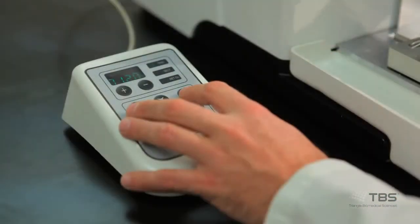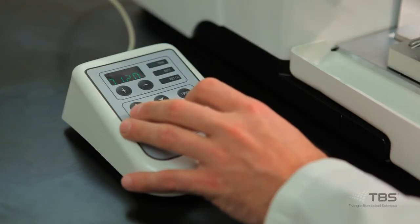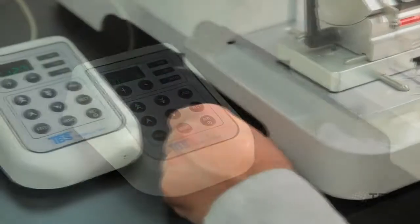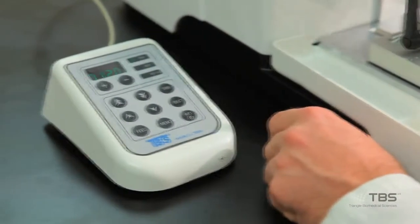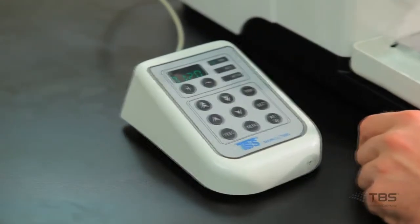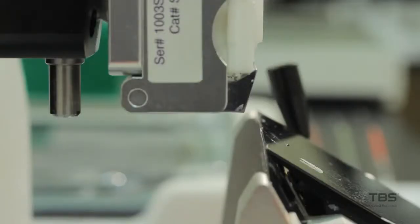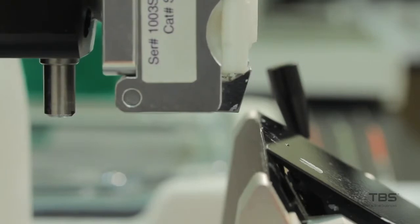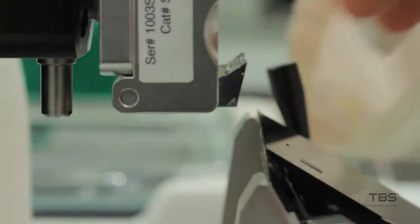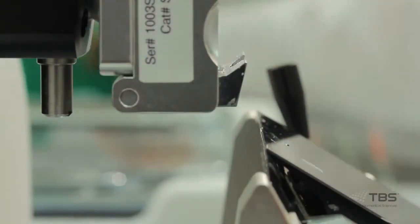The SC2500 model includes a user-friendly handpad controller that allows the operator to store separate trimming and sectioning thicknesses. An automatic specimen positioning memory function allows the tech to remove a block for rehydration or cooling.